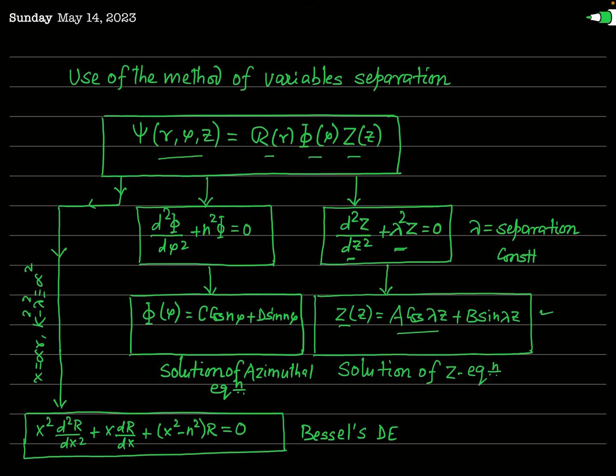The second equation from variable separation is d²Phi/dphi² plus n²·Phi equals zero, where n is also a separation constant. This is again the equation of simple harmonic motion, so its solution Phi(phi) is oscillatory: Phi(phi) equals C·cos(n·phi) plus D·sin(n·phi).